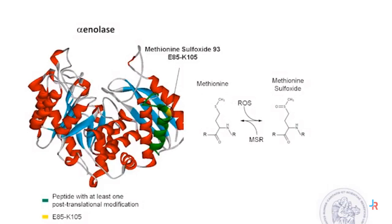Another important aspect related to NET proteins is that in many cases they undergo deep post-translational modification. For example, in some cases they may undergo oxidation or other processes. Here is alpha-enolase, which undergoes oxidation with the formation of methionine sulfoxide at position 93, shown here in yellow in this line.